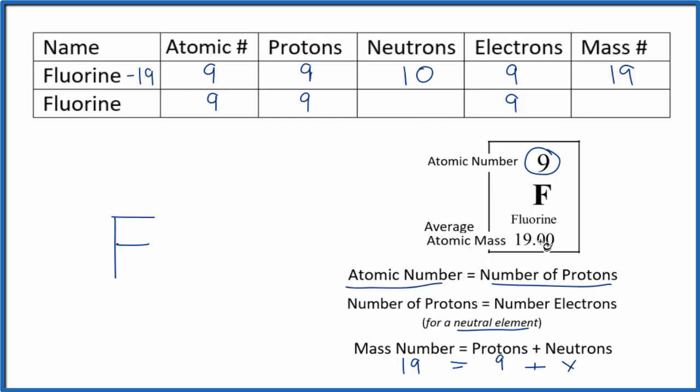And that kind of makes sense because when we look at the average atomic mass, that's an average of the mass of the isotopes based on their abundance. So since most of them have a mass number of 19, this will be very close to 19.